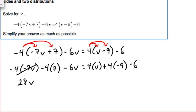Let's cross that out. We'll bring down this negative 6v equals 4 times v is simply 4v, positive 4 times negative 9 is negative 36, and we'll bring down this negative 6.